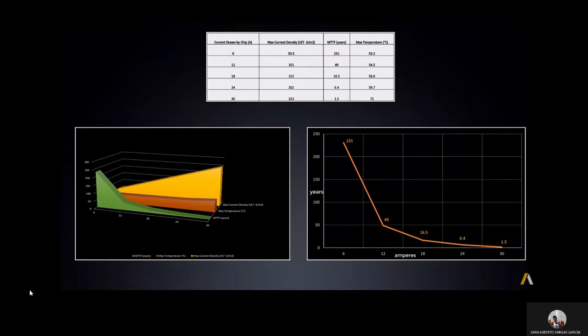When the chip draws 6 amps, the mean time to failure is over 200 years. Nothing to worry about. But if the chip were to draw 24 amps, its lifespan reduces to just over 6 years, and at 30 amps it drops to 1.5 years.